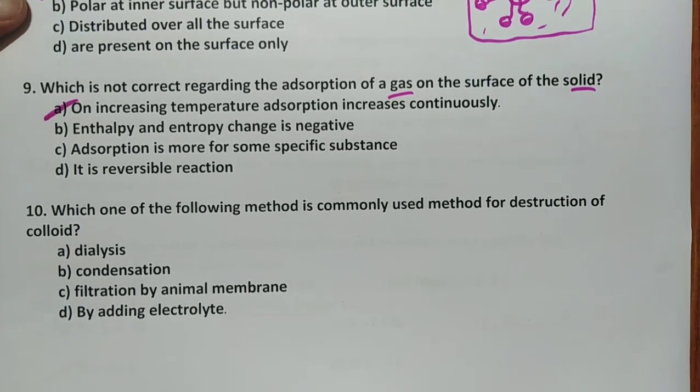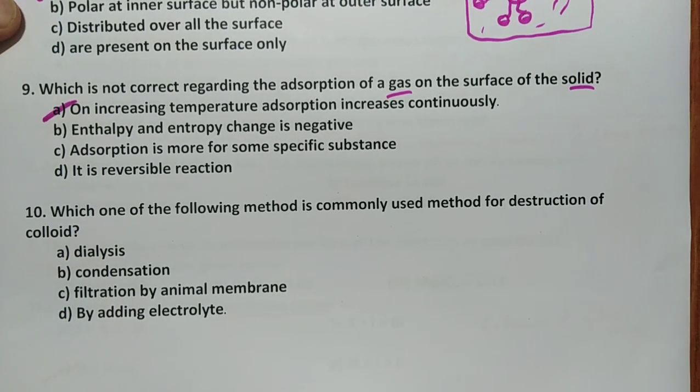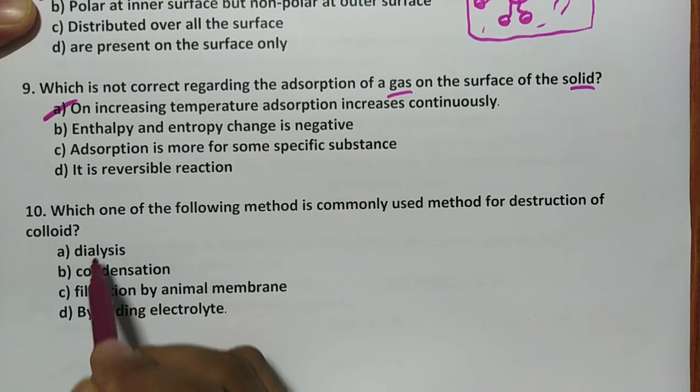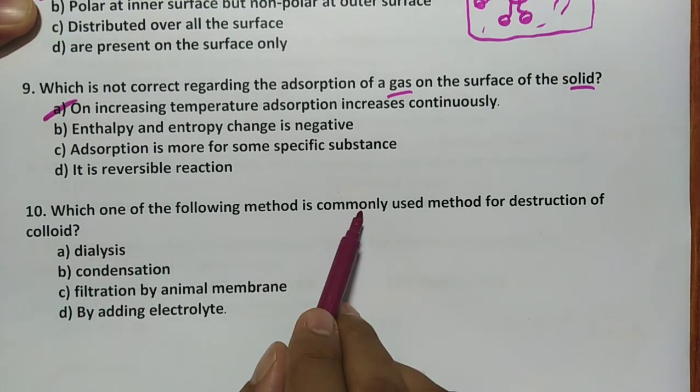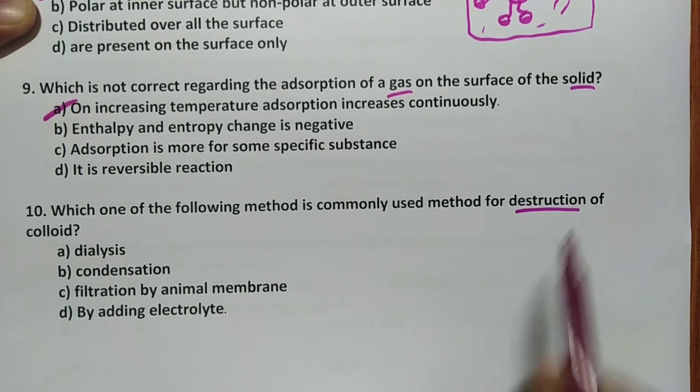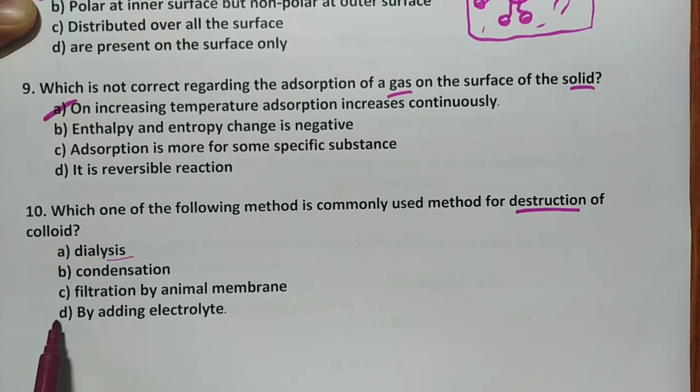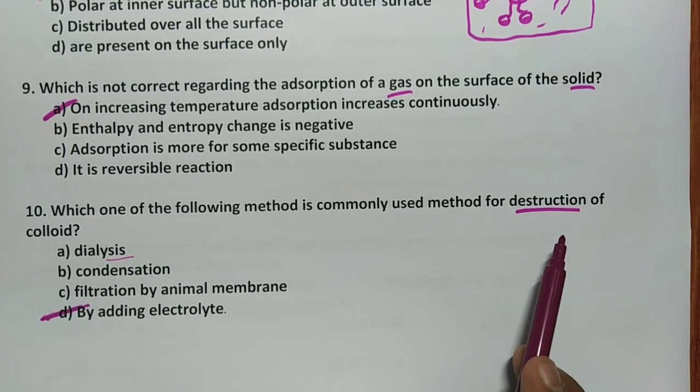Which one of the following method is commonly used method for destruction of colloid? Destruction of colloid means converting colloid into suspension. Dialysis is not. If the answer is prolonged dialysis, then it is used in destruction, but only dialysis is the purification method. Condensation is formation of colloid method. Filtration by animal membrane is nothing but dialysis. But by adding electrolyte is the answer here, because by adding electrolyte, destruction takes place to form suspension.